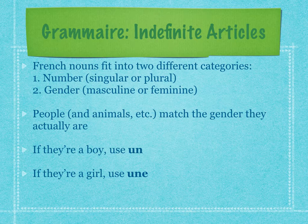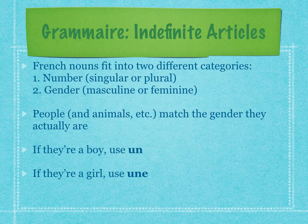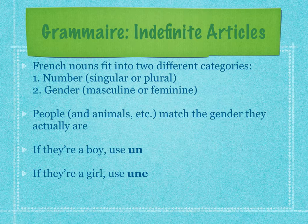All French nouns fit into two different categories. We're going to worry about number — are we talking about one thing or more than one thing? And we're going to worry about gender — are we talking about a guy or a girl? We're going to match the gender they are. So if they're a boy, we're going to use 'un' to mean 'a.' For example, un garçon — a boy.